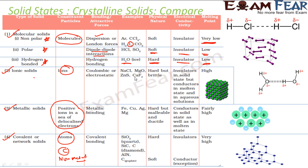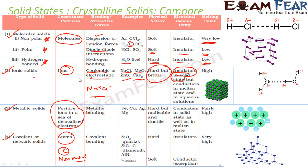We talk about the ionic solids — they have ions and they have electrostatic forces of attraction, like Na⁺ and Cl⁻ full charges. Since the force of attraction is very very strong, for example NaCl, they are very very hard, but they are brittle. They are also insulators in solid state, but in molten state or in aqueous solution they can conduct. They have a very high melting point.